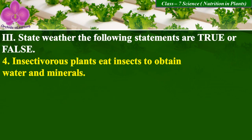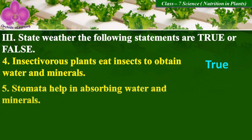Insectivorous plants eat insects to obtain water and minerals. True. Stomata help in absorbing water and minerals. False.